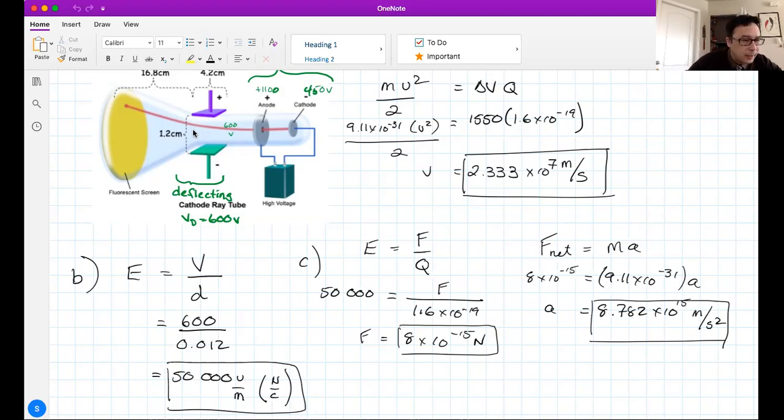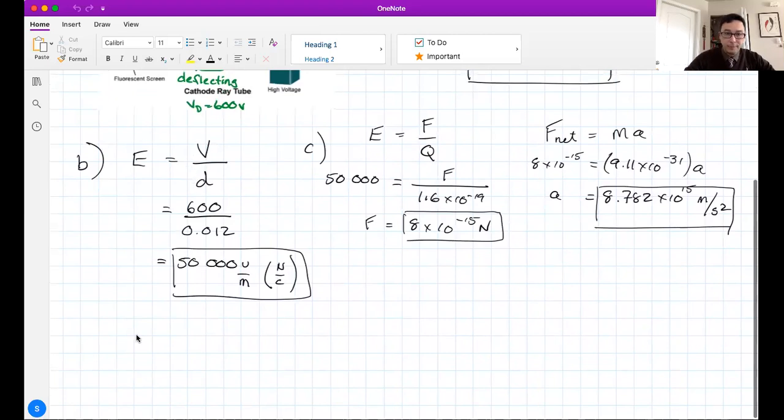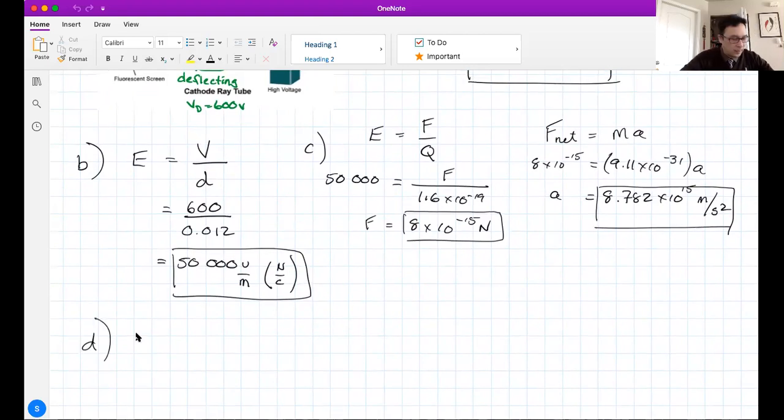Part D asks for the plate deflection of the electron beam. Let's find the plate deflection first. I'm going to create some more space for myself. First thing we need to do is find the distance that the electrons are going to move upwards. That distance is given by this kinetics equation. Initially, the V naught, the initial speed in the upwards direction, is zero, so V naught times T is automatically zero.